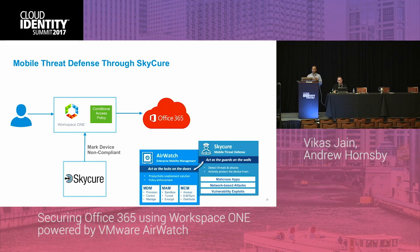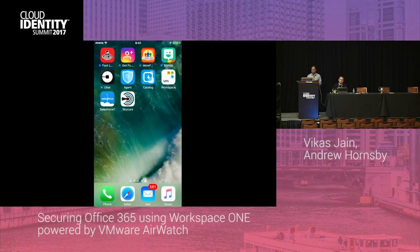If you've invested in third-party products, let's look at how they integrate with Workspace ONE. Starting with Mobile Threat Defense vendors — SkyCure, and the same integration works with Lookout. SkyCure continuously monitors for threats on the mobile device and makes the device non-compliant when a threat is detected. Once non-compliant, Workspace ONE picks that information up and blocks access — whether for native email or modern auth clients — based on device compliance posture.